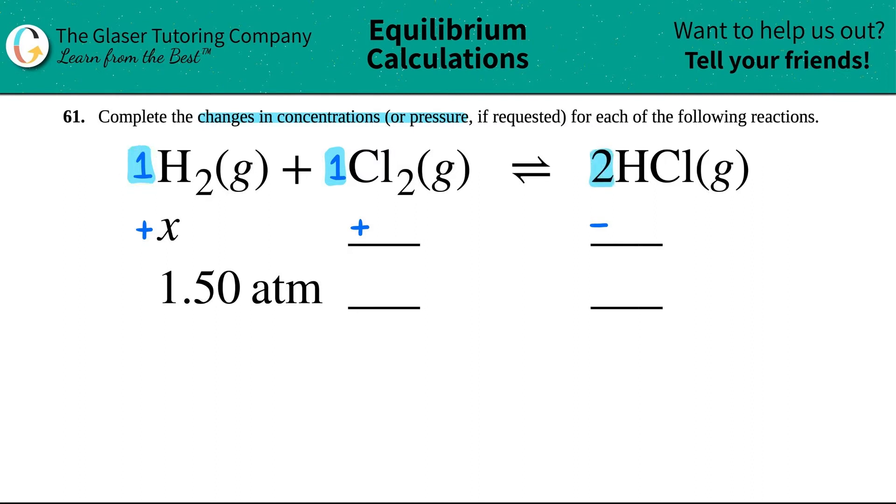The coefficient value is the number in front of the X value. So for ones, this was technically plus one X. But remember, when we say one X, we just say X. So the same thing goes for here. This would be plus one X, but one X is the same as X. So I can just say plus X.